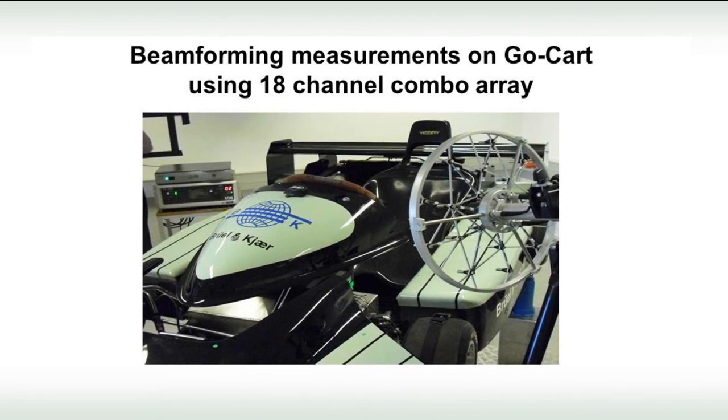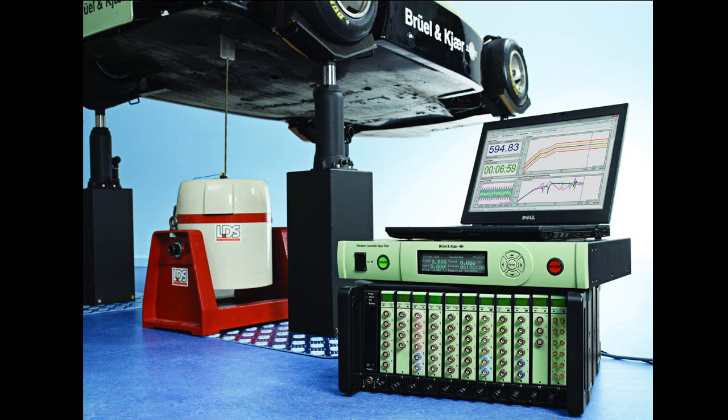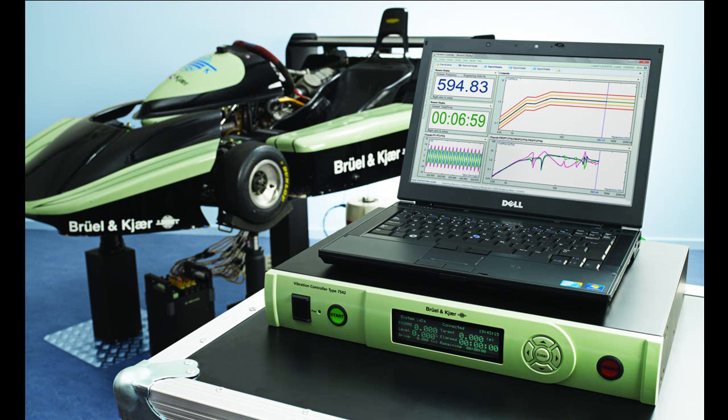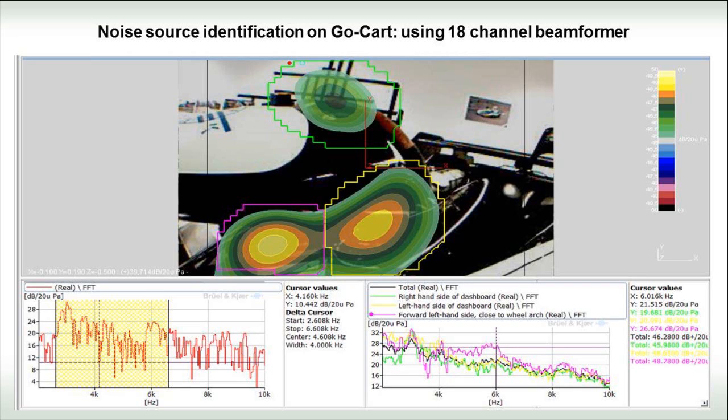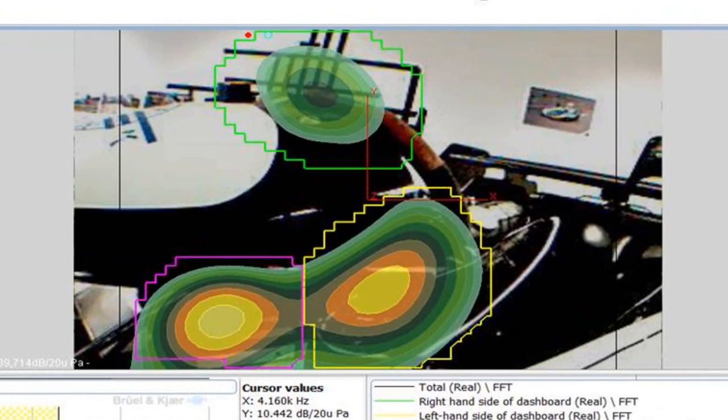Noise source identification using the beamforming technique is often used to provide a quick overview of the noise sources on a vehicle. The go-cart shown here was placed on a vibration exciter and shaken as part of a buzz, squeak and rattle test. The main sources could easily be identified from the noise map and ranked in order of importance.